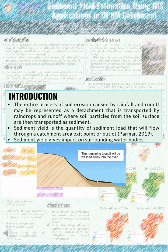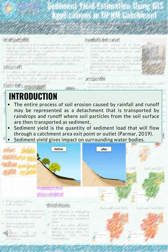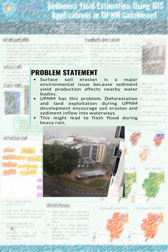Sediment yield is the quantity of sediment load that will flow through a catchment area at a given point or outlet, and will give impact on surrounding water bodies. By analyzing the rate of soil erosion occurring within that catchment, it is possible to obtain information about the occurrence of sediment yield in that area. Surface soil erosion is a major environmental issue because sediment yield production affects water bodies.